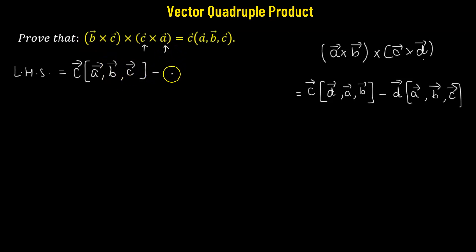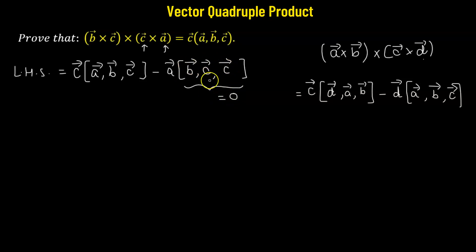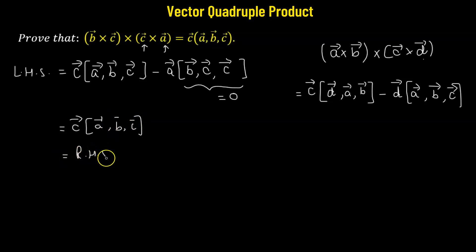Minus: we use the fourth vector, vector a, multiplied by the scalar triple product of the remaining vectors. Coming back to the beginning we have vector b, followed by vector c and vector c. By definition, the scalar triple product of b, c, c is zero, because when two vectors are exactly equal the scalar triple product is zero. That means we are left with vector c multiplied by [a, b, c], which is the right hand side we needed to prove.